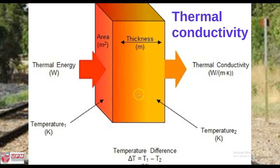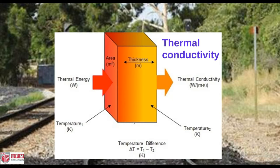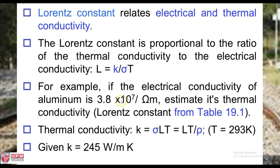Thermal conduction is a phenomenon in which heat is transported from high-temperature regions to low-temperature regions. The property that characterizes this heat transport is called thermal conductivity. The heat transfer rate Q-dot is equal to minus K times dT over dx, where x is the thickness and dT is the change in temperature. We can also relate thermal conductivity to electrical conductivity using the Lorentz constant, defined as minus K over sigma times T, where sigma is electrical conductivity.